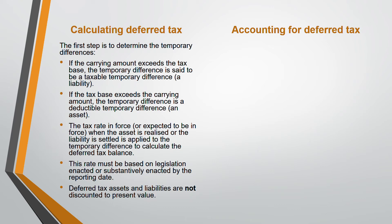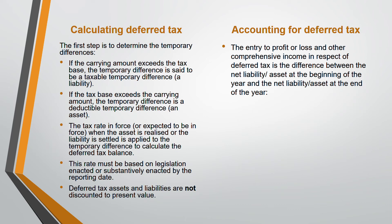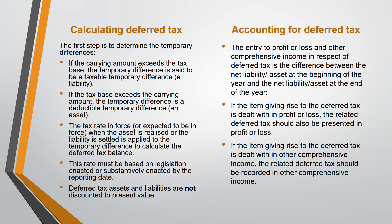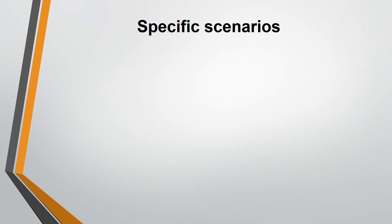How to account for deferred tax: the entry goes either to profit or loss or to other comprehensive income. The difference between the opening and closing net deferred tax liability or asset determines the movement. The key rule is: if the item giving rise to deferred tax is recognized in profit or loss, the deferred tax also goes to profit or loss. If it is recognized in OCI, the deferred tax also goes to OCI. For example, if a deferred tax asset arose from revaluation of a non-current asset, that revaluation gain is in OCI, so the deferred tax is also recognized in OCI.